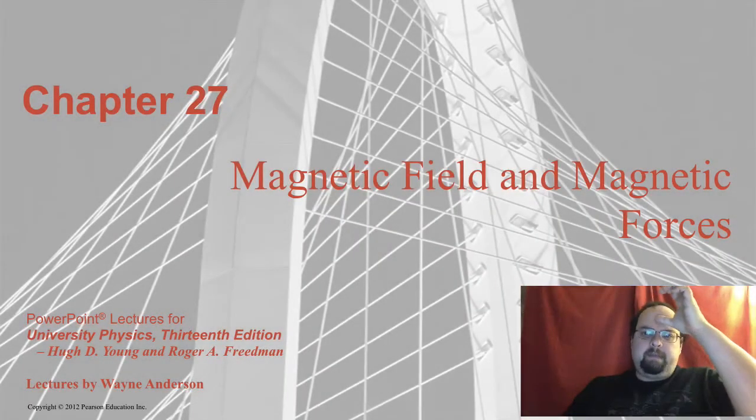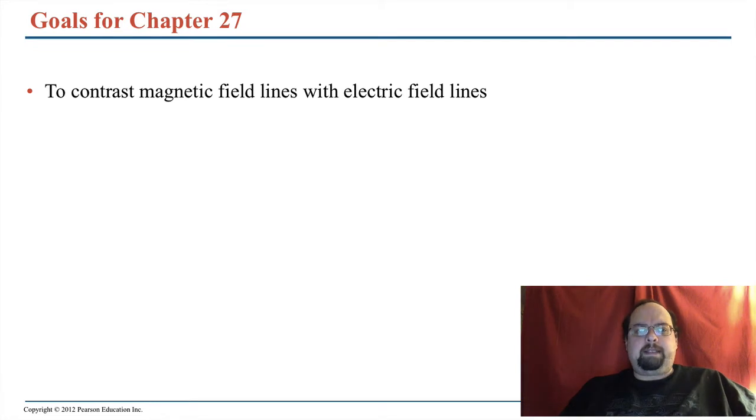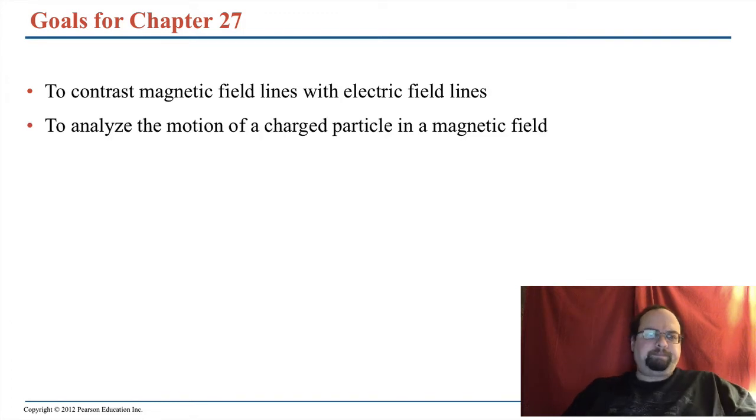Continuing with Chapter 27, Magnetic Fields and Magnetic Forces. Tonight we're going to look at the contrast between magnetic fields and electric fields. There are a lot of similarities, but we should look at both those and the differences. We're going to analyze the motion of a particle in a magnetic field. We already looked at the force on it, but there are some implications to the force always being perpendicular to the motion that affects its motion. It will give you a very distinct and special type of motion.